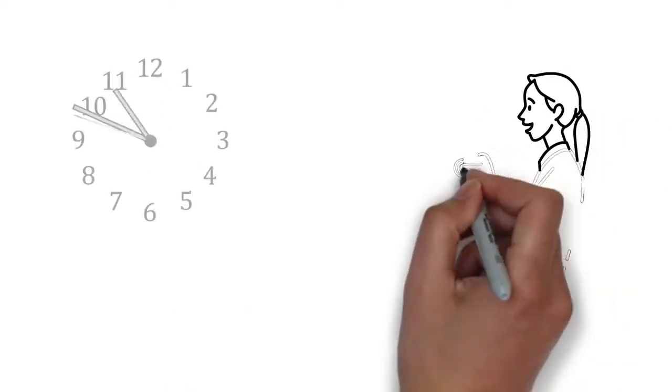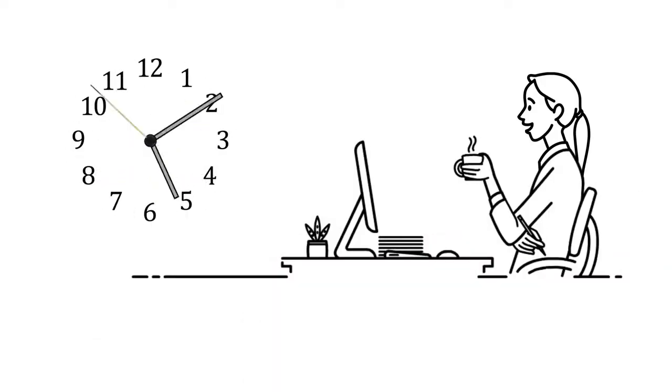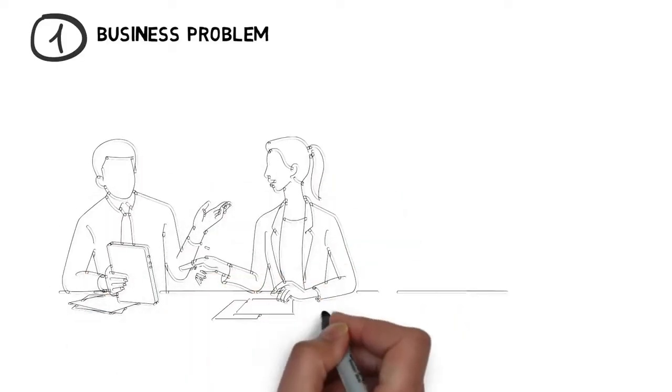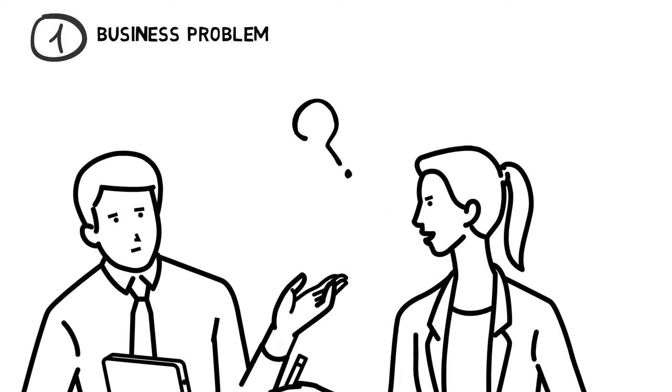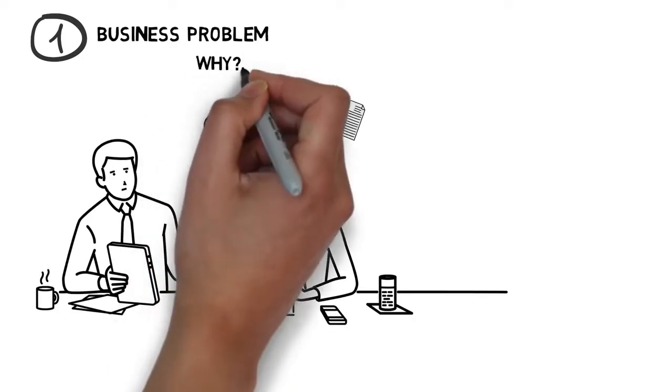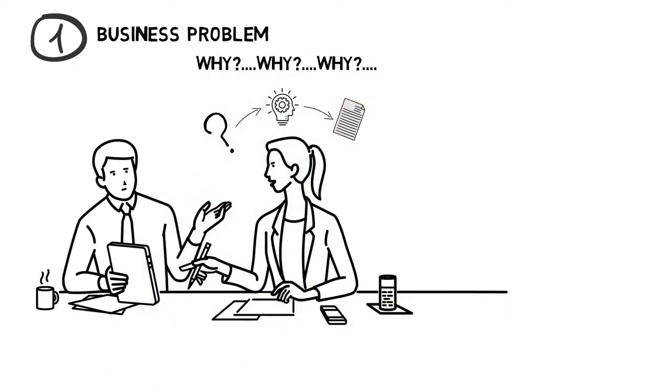Meet Emma, the data scientist. Let's see how a day in her life goes while she's working on a data science project. It's very important to understand the business problem first. In her meeting with the clients, Emma asks relevant questions, understands and defines objectives for the problem that needs to be tackled. She's a curious soul who asks a lot of whys—one of the many traits of a good data scientist.